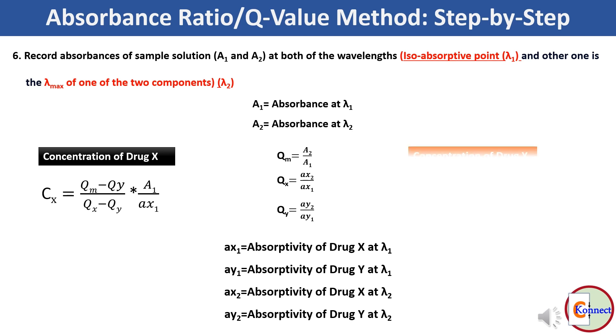Likewise, concentration of drug Y can be found out by using this formula: (Qm - Qx) / (Qy - Qx) multiplied by the ratio of A1 and aY1. In this way, you can perform quantitative analysis by using absorbance ratio method by UV visible spectroscopy.